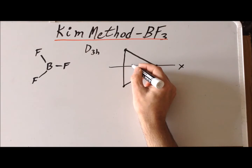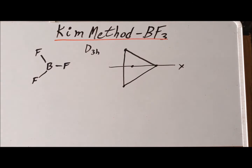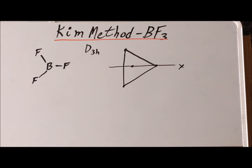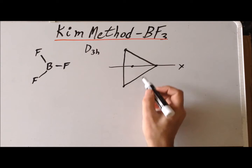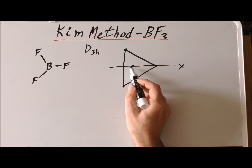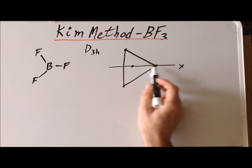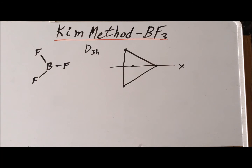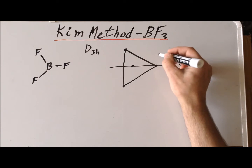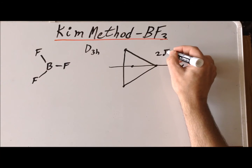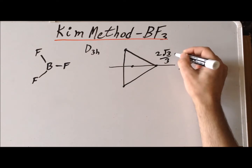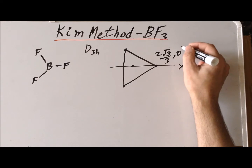We recognize that the center of the equilateral triangle is the origin, which would have coordinates of (0, 0). If this is the center of the equilateral triangle, then this distance to the right of the origin is going to be 2 times the square root of 3 over 3, and the y-coordinate is going to be 0 because it's along the x-axis.